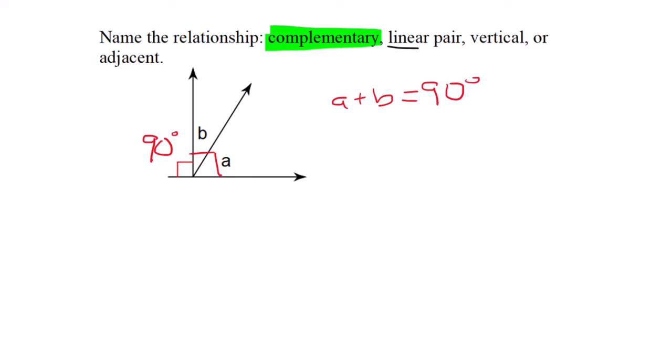If they were a linear pair they'd add up to 180. If vertical, they'd be across from each other and equal. Adjacent means right next to each other, which is true, but the better answer is complementary.